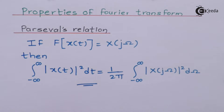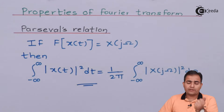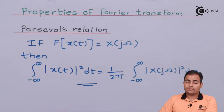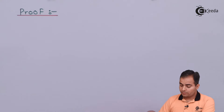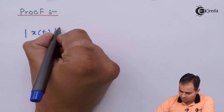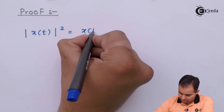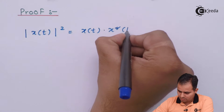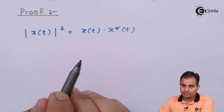First of all, we know that x(t) multiplied with its complex conjugate value — that is x(t) into x*(t) — is always equal to mod of x(t) whole square. This is something we have studied in mathematics, and we will start from that value. So mod of x(t) whole square can be represented as x(t) into x*(t).